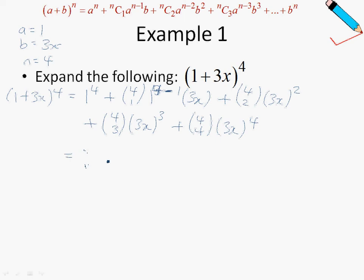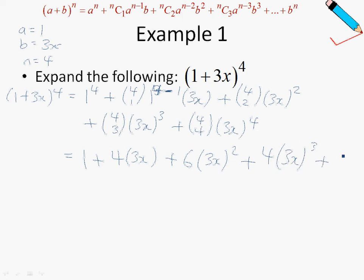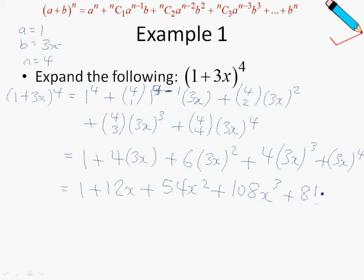Let's simplify this. 1 to the power of 4 is just 1, and 4 choose 1 is just 4, so 4 times 3x. And 4 choose 2 — if you're wondering how to get those values, you can just use your calculator — and 3x squared. Over here, 4 choose 3, which is just 4, times 3x to the power of 3, and finally 4 choose 4 is just 1, and then 3x to the power of 4. Simplifying further: 1 + 12x + 6 times 9 = 54, so 54x² + 4 times 27 = 108x³ + 81x⁴.